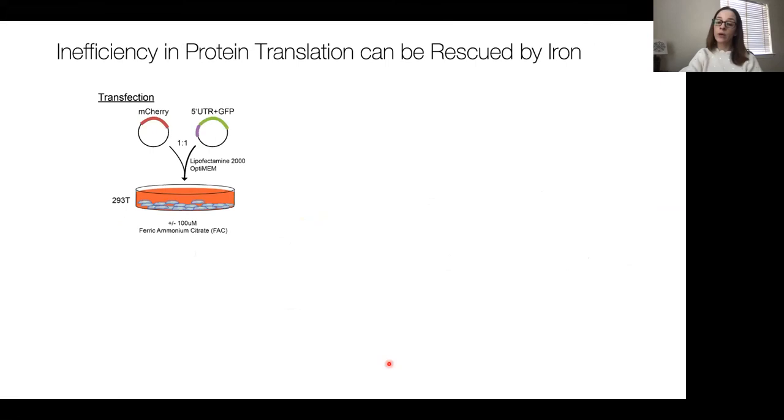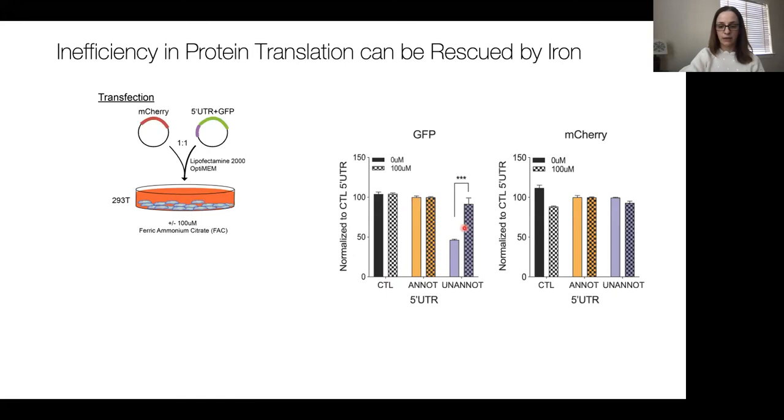Another way we could go about this was to ask: if we overload the cells with iron, and that iron sequesters away the iron regulatory proteins and releases the effect on the gene, would we also reverse that phenotype? We did the same thing, this time overloading cells with iron using ferric ammonium citrate. Again, we can see that indeed we can reverse that phenotype. Here we have our unannotated 5' UTR translating much less efficiently than the annotated, and if you overload cells with iron, you're reversing this. This really suggests this 5' UTR element can be regulated through this iron response element.